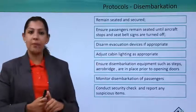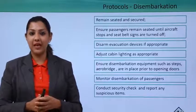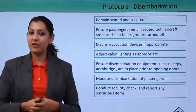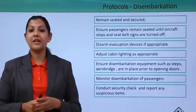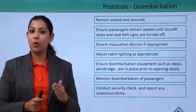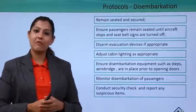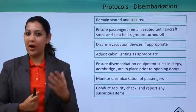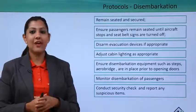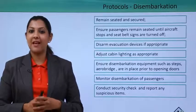Crew must ensure disembarkation equipment — such as steps or an airbridge — is aligned before opening the cabin door. The front crew member must confirm either a step ladder or airbridge is in place before opening the door. Crew monitor disembarkation, thanking each passenger as they leave. A security check is conducted, and any suspicious material left behind by passengers is reported to ground staff.